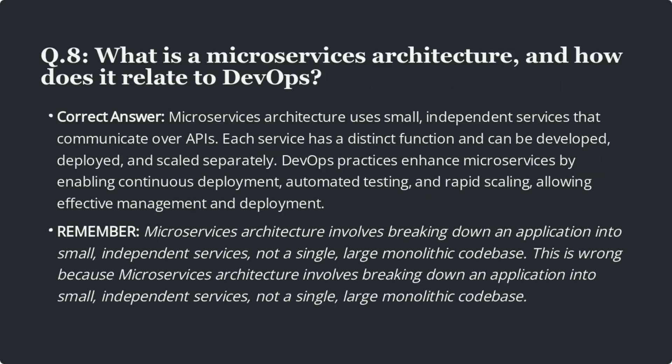Question 8: What is a microservices architecture and how does it relate to DevOps? The correct answer is microservices architecture uses small, independent services that communicate over APIs. Each service has a distinct function and can be developed, deployed, and scaled separately. DevOps practices enhance microservices by enabling continuous deployment, automated testing, and rapid scaling. Always remember: microservices involves breaking down an application into small, independent services — not a single, large monolithic codebase.